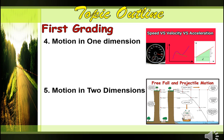The fourth topic is motion in one dimension, followed by motion in two dimensions. For motion in one dimension, you are going to learn about speed, velocity, and acceleration, and how they are interrelated with one another. Also, you are going to learn how to solve some graphical analysis. In motion in two dimensions, going back to grade 9, you have learned the different types of gravitational motions, including freely falling bodies and projectile motion.